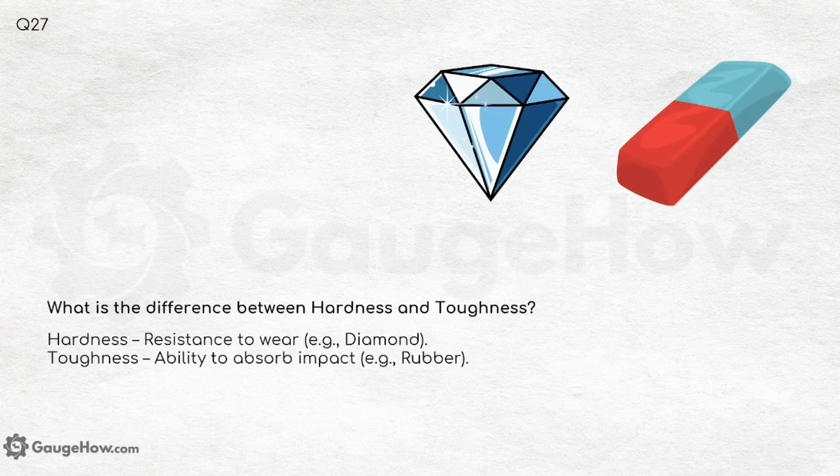What is the difference between hardness and toughness? Hardness is resistance to wear — for example, a diamond — while toughness is the ability to absorb impact — for example, rubber.